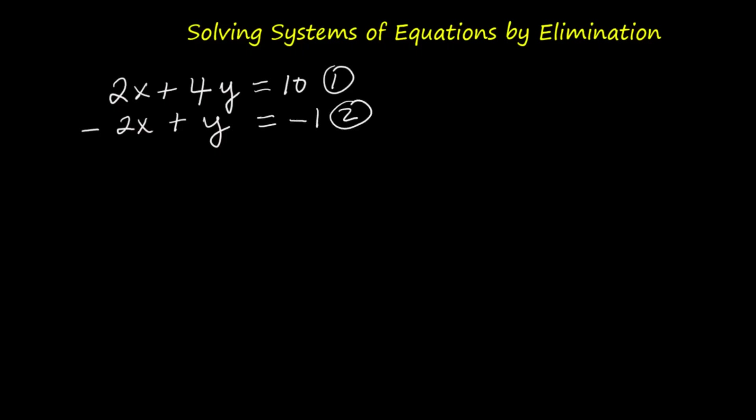Using elimination, we want to add the two equations. Notice the x terms are opposites — 2x and negative 2x — so they'll cancel out.